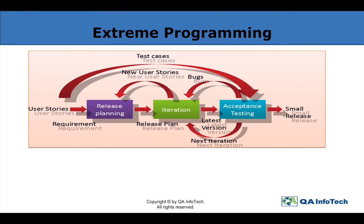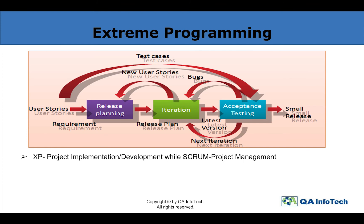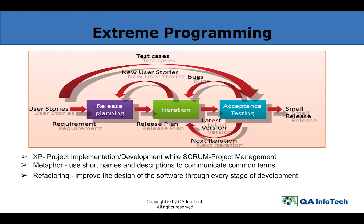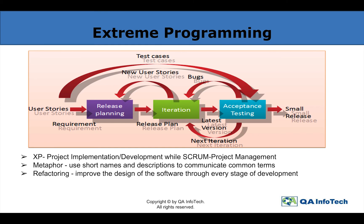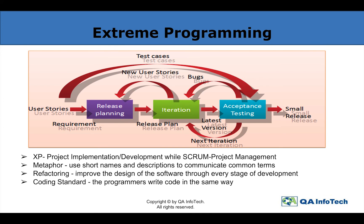XP teams are much more amenable to change within their iterations. As long as the team hasn't started work on a particular feature, a new feature of equivalent size can be swapped into the XP team's iterations in exchange for the unstarted feature. XP focuses on project implementation and development, while Scrum focuses on project management. All members on an XP team use common names and descriptions to guide development — this is known as Metaphor. Refactoring means XP programmers improve the design of the software through every stage of development instead of waiting until the end to correct flaws. Under Coding Standard, all programmers write code in the same way, allowing them to work in pairs and share ownership of the code.